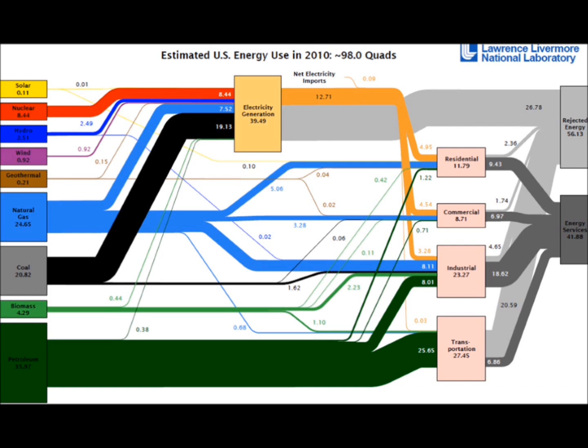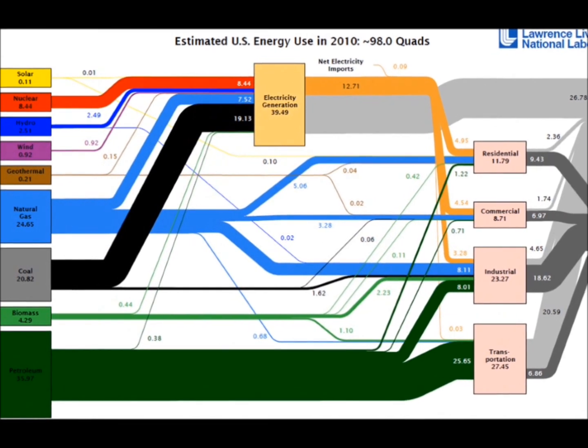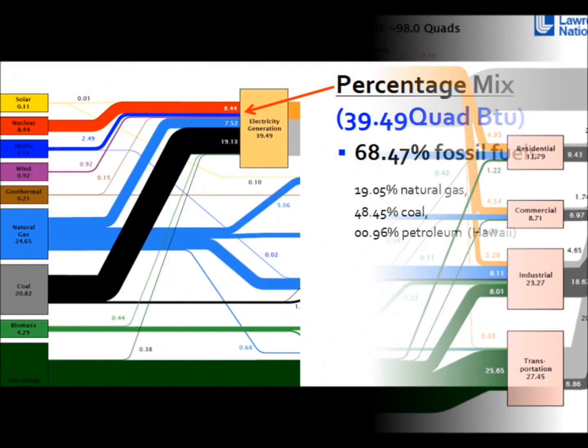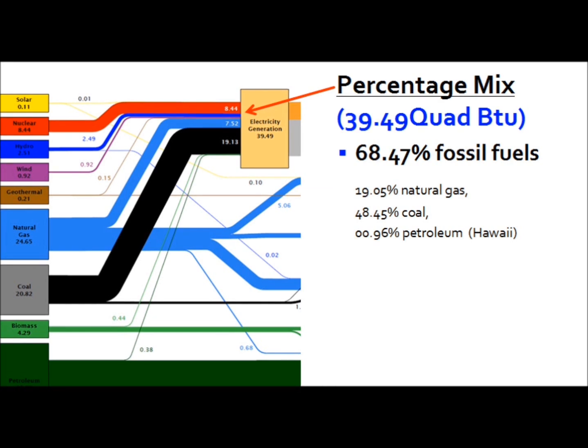The focus of this presentation is primarily electricity production. We'll narrow our scope to that area and zoom in to view these sources in more detail. Grouping these sources into categories of renewables, nuclear fuels, and fossil fuels, we'll see that electricity generation is almost 70% driven from fossil fuels.